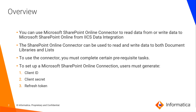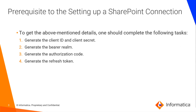In order to set up this connection there are a few prerequisite tasks. These tasks are used to generate the client ID, client secret, and the refresh token that are needed for the connection setup. There are four steps to complete: first, get the client ID and client secret; second, generate the bearer realm; third, get the authorization code; and the final step is to generate a refresh token.